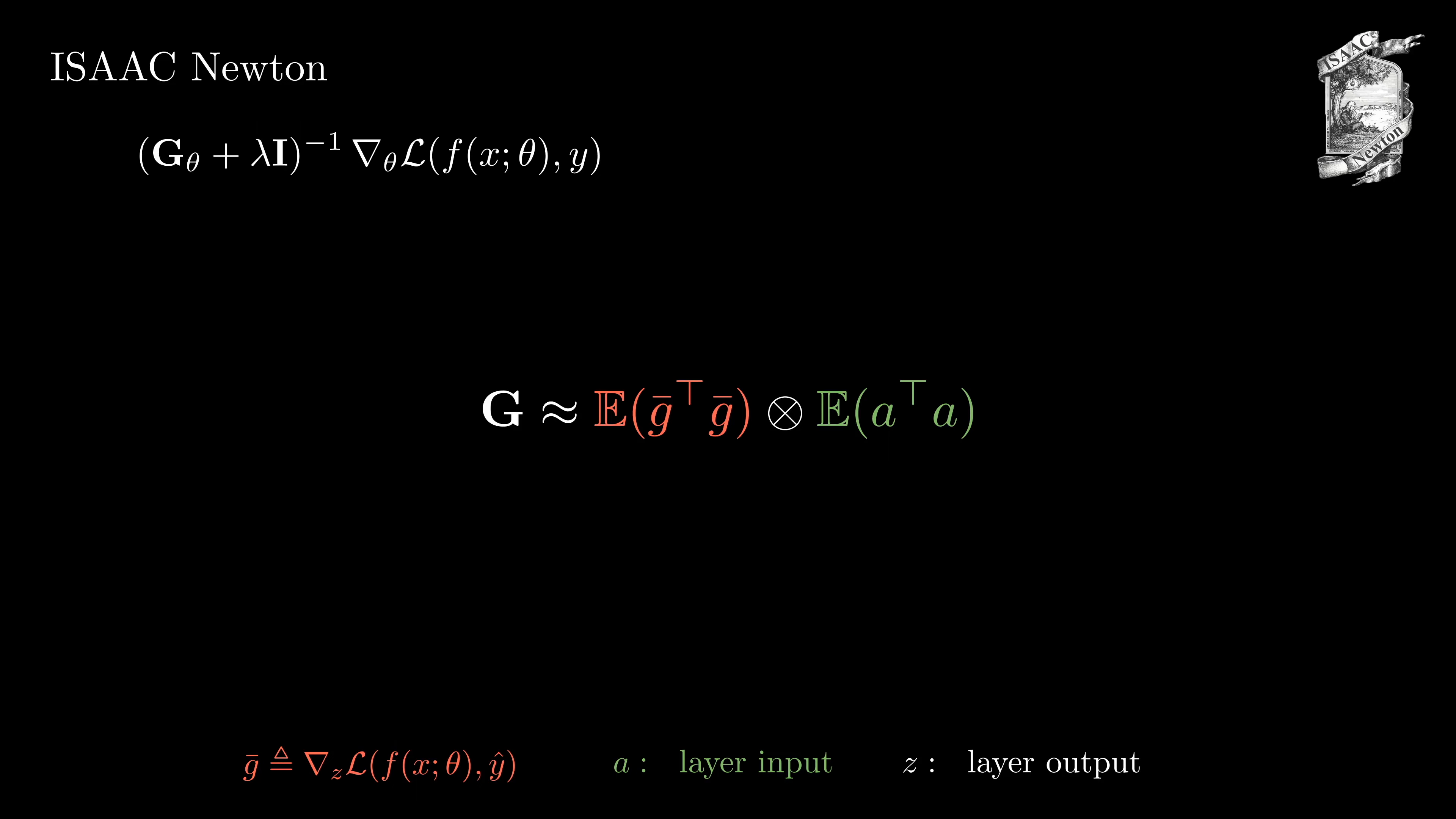As this is very expensive, we would ideally like to avoid computing g bar at all and thus we want to investigate whether we might be able to replace the expectation of outer products of g bar simply by the identity, thereby removing the computational overhead almost entirely.